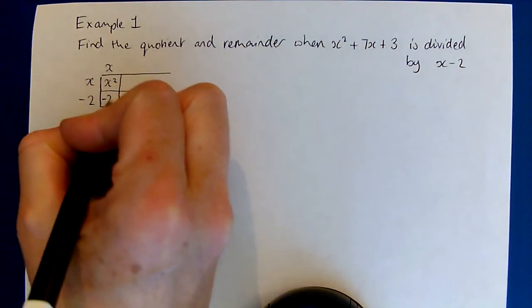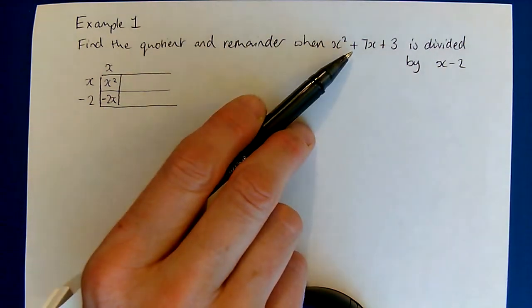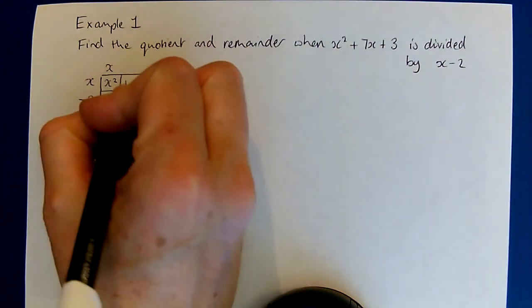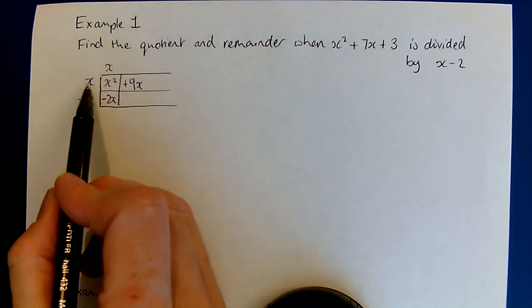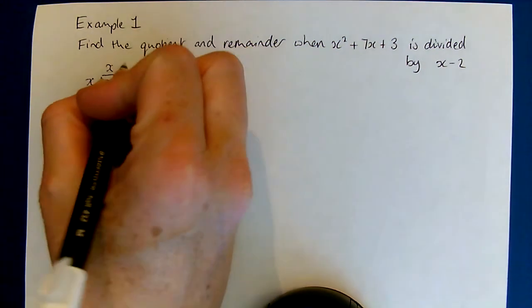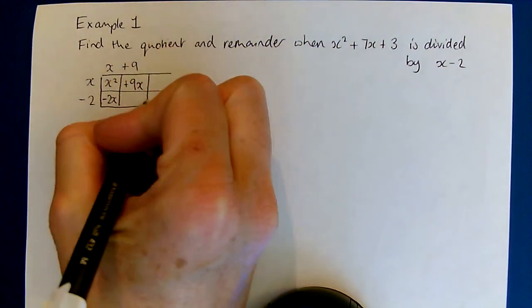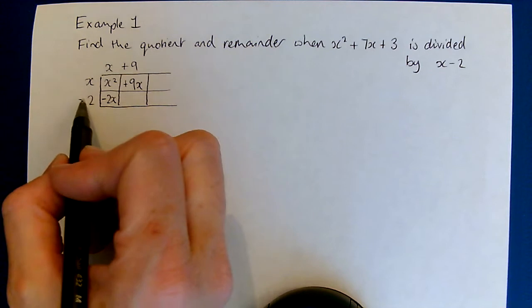Now I can multiply these two terms together to get minus 2x, but I don't want minus 2x, I want add 7x, so I need 2 plus 9x to make that happen. What do we multiply x by to make plus 9x? We need a plus 9.